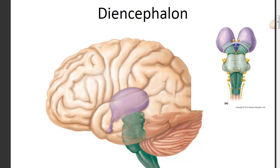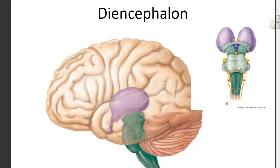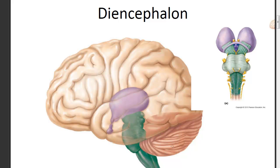Down deep inside, underneath the cerebral cortex, is the diencephalon, shown in purple here. You can think of it almost like a peach pit in the middle of a peach. It's not just one circular portion, but actually two large, somewhat spherical swellings inside the center of the brain.